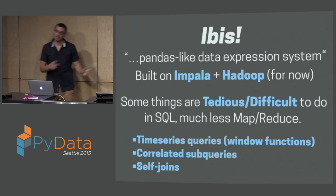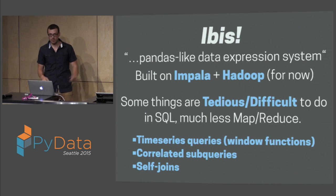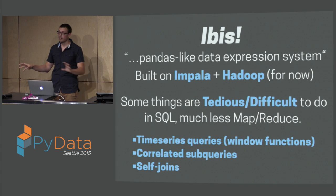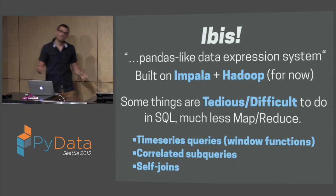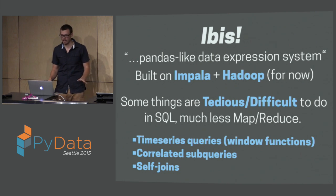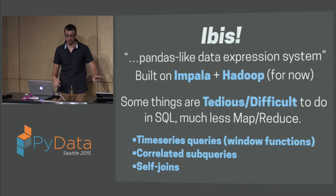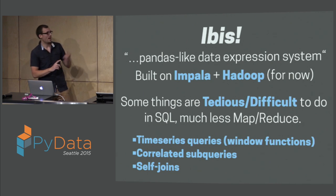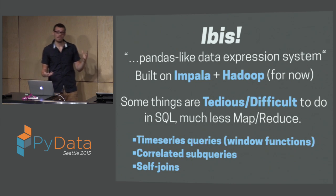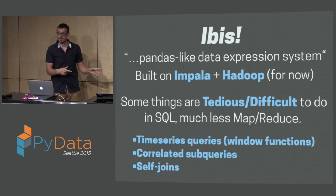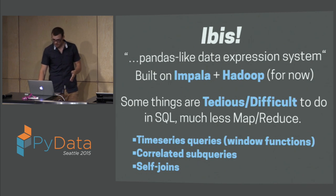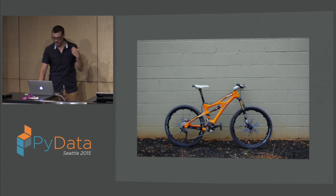Quickly, let's talk about Ibis — Wes McKinney's new project, the original author of Pandas. We talked about Blaze as an expression system that maps to different compute engines. Ibis is the same sort of thing: a Pandas-like expression system that maps to Impala and Hadoop. The idea is that some things are tedious or difficult to do in SQL, much less MapReduce — things like time series queries and correlated subqueries. The Ibis API has five different types of joins, some of which aren't easy to do in SQL. Ibis will create expressions and you can apply those via Impala and Hadoop. There's actually a bike brand called Ibis, so naturally we have an Ibis bike.